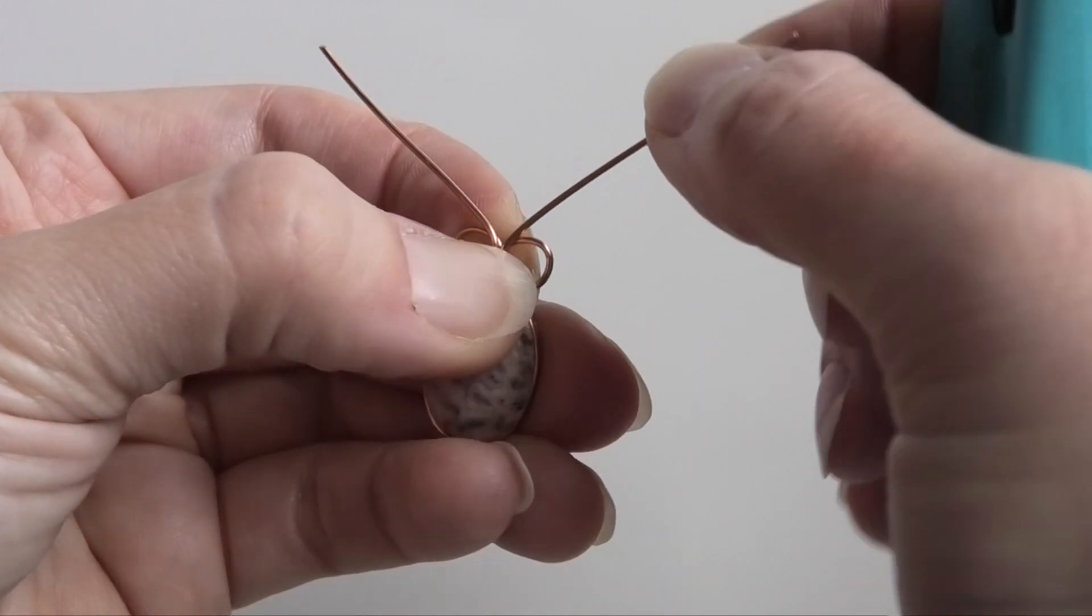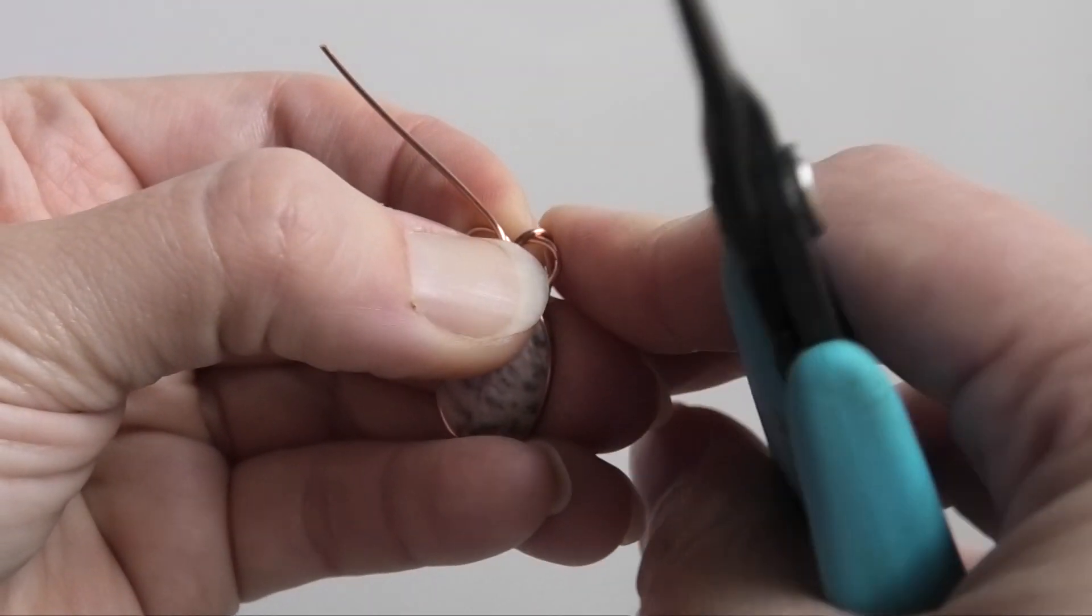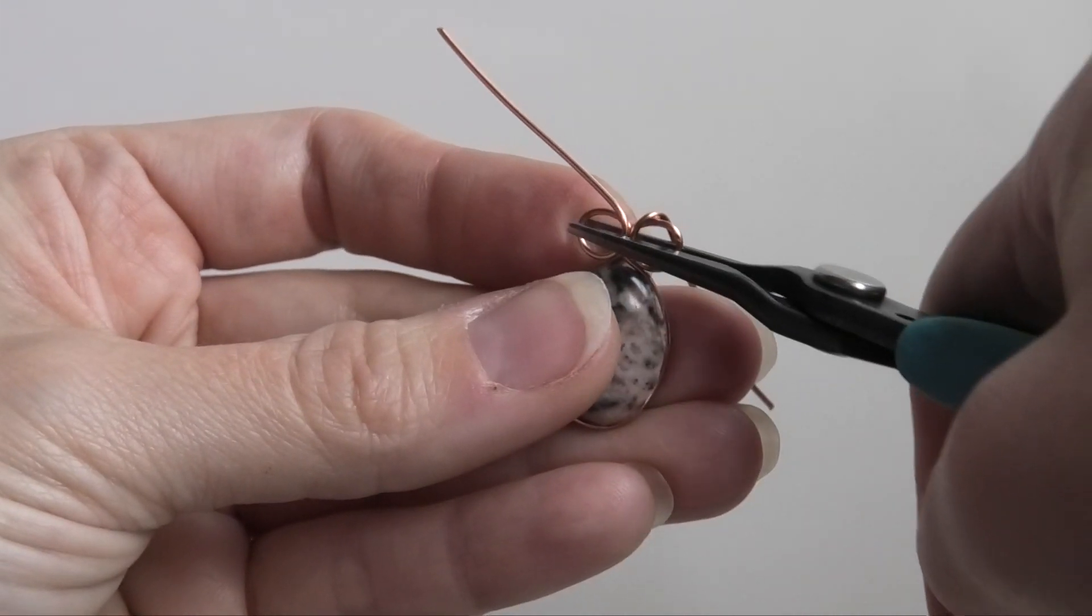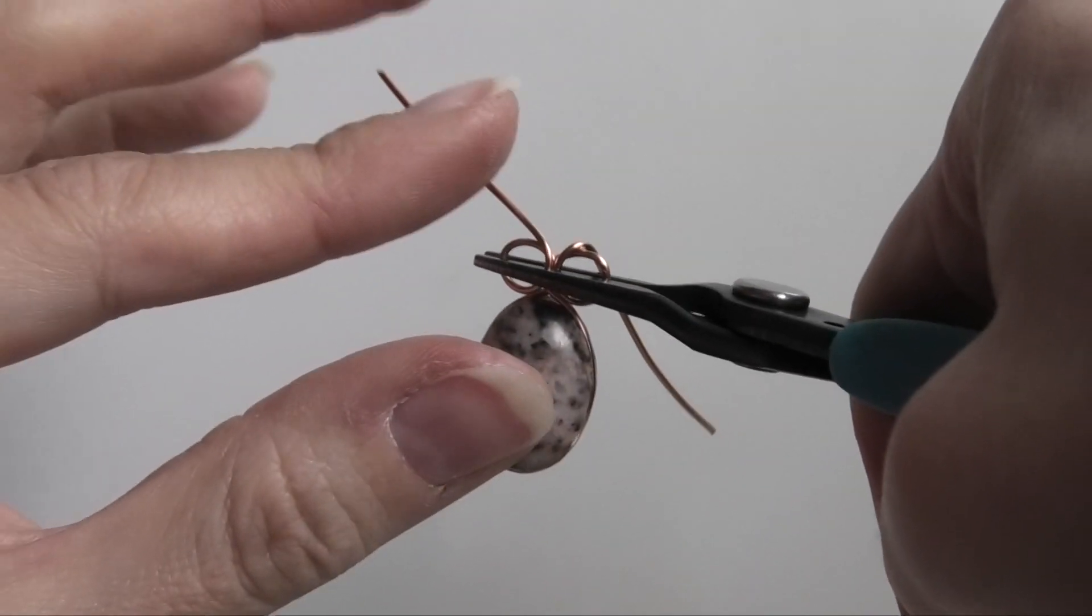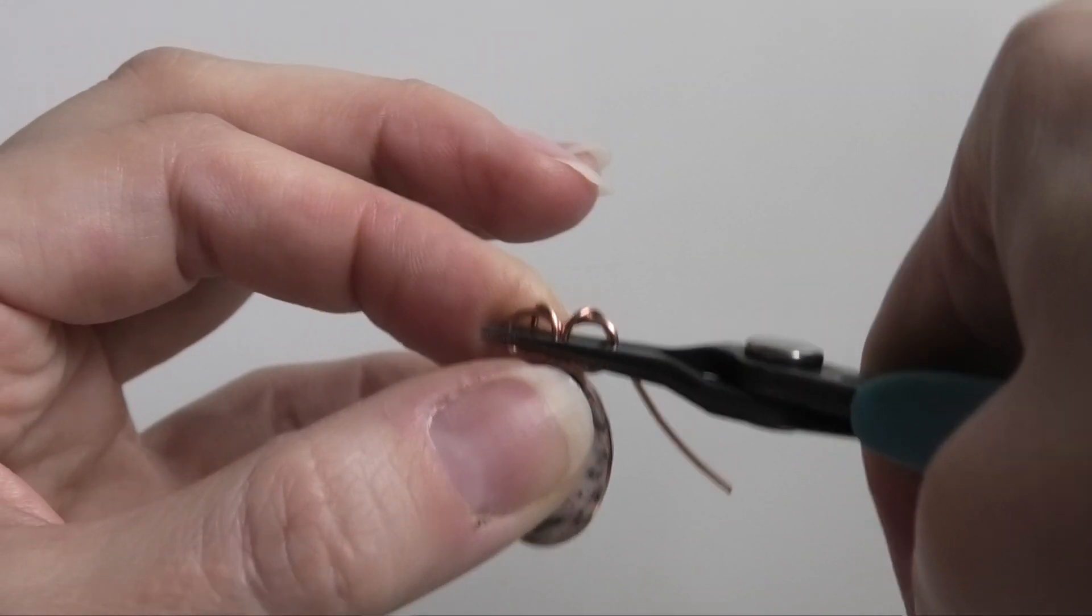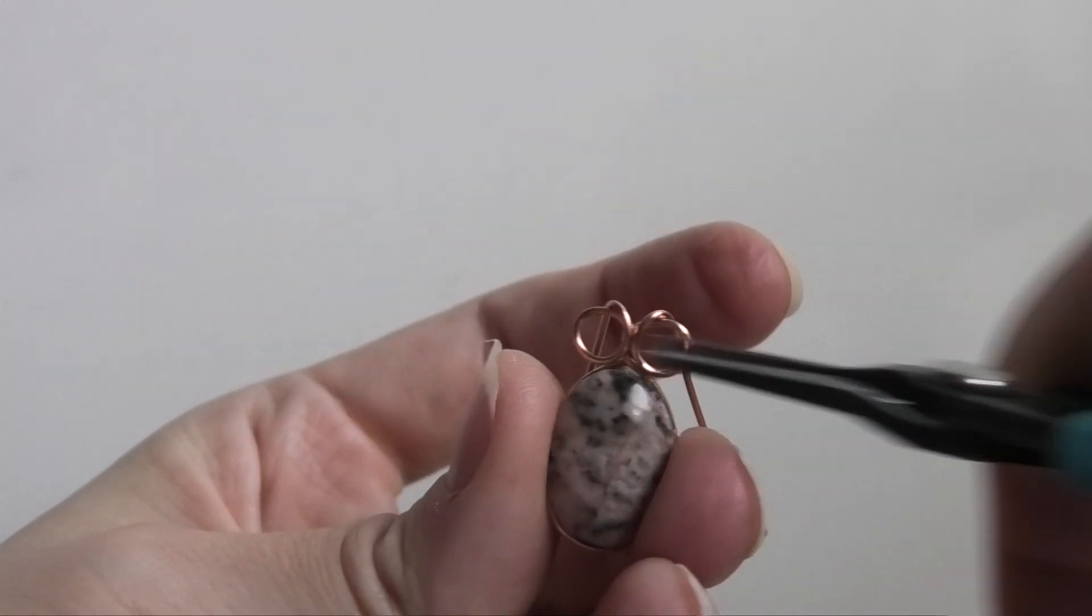And so now, we're just going to take these wires and we're going to bend them. If you want, you can hold with your pliers like this, if that makes it easier for you. And just bend down and down in this direction.